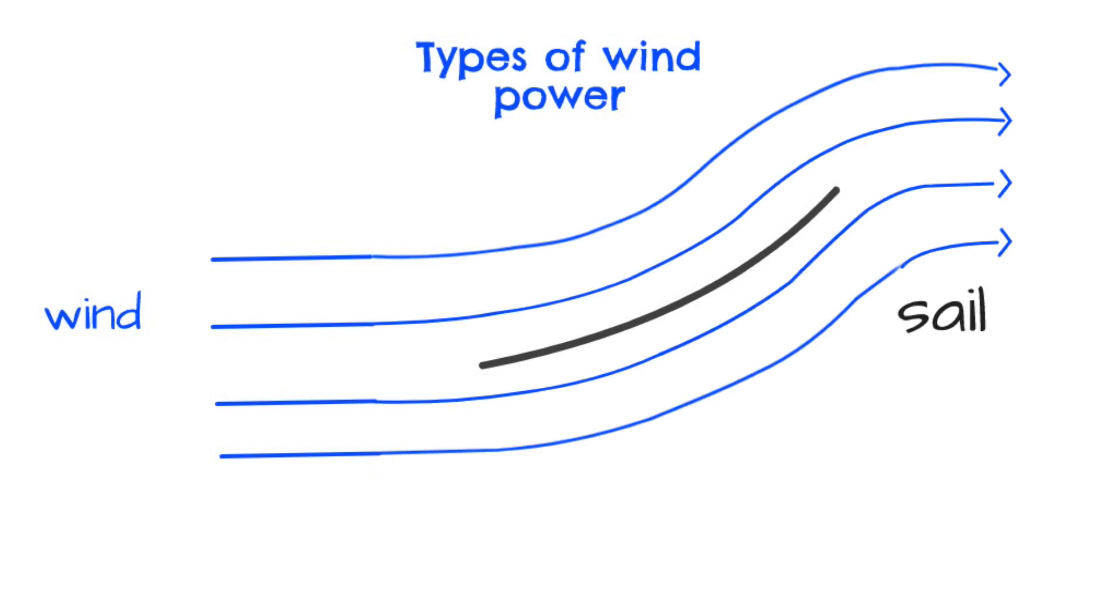Now let's consider the second type of wind power. Consider a sail oriented so the wind approaches it at an angle. If the sail is oriented at the correct angle, the wind flows smoothly past both sides of the sail.